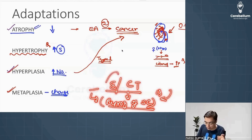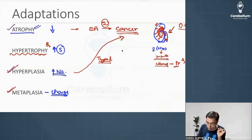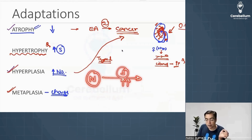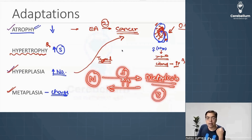Between the two types of metaplasia, epithelial metaplasia is far more common in comparison to connective tissue metaplasia. When there is any kind of stress on the normal epithelium and there is a change in the nature of the epithelium or connective tissue, that would be given the name of metaplasia. The good point about metaplasia is that if you remove this stress, it is a reversible change. Metaplasia itself is not cancerous — it is a benign change — but if it is present for a long duration of time, it can certainly progress to cancer.